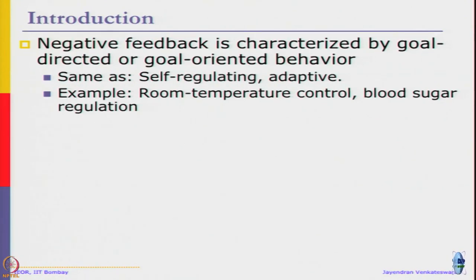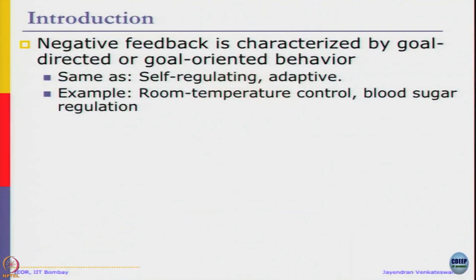Most of the control systems models where there is feedback involved fall into this category, where you are looking at current state versus an actual desired state, then taking the gap between them and trying to control the system. Examples include room temperature control, blood sugar regulation, things like that.